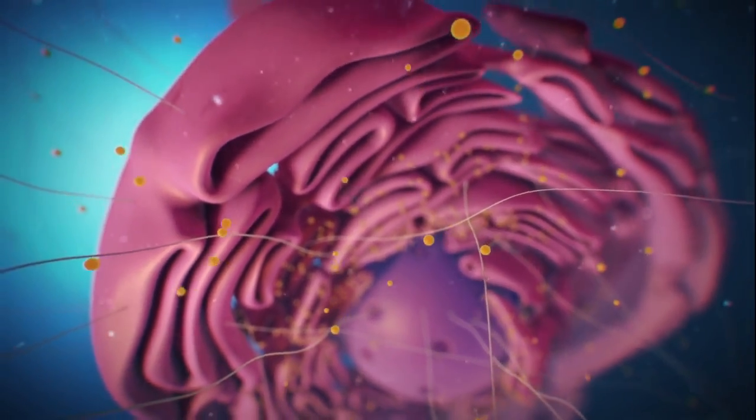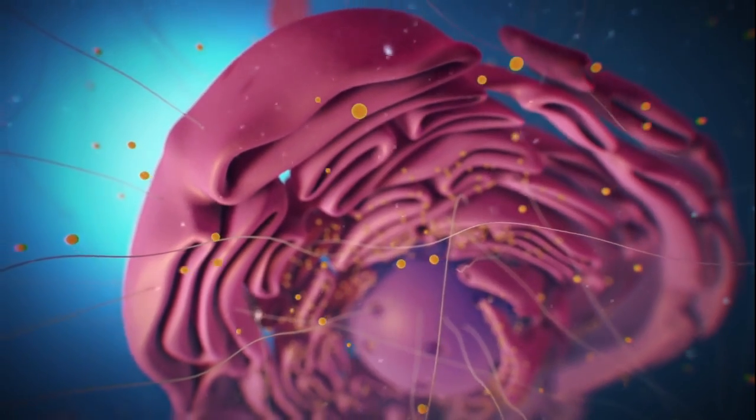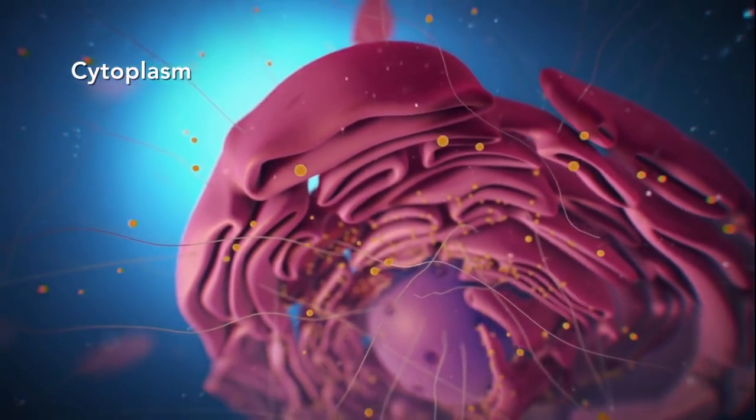Outside the nucleus, the ribosomes and the rest of the organelles float around in cytoplasm, which is the jelly-like substance.